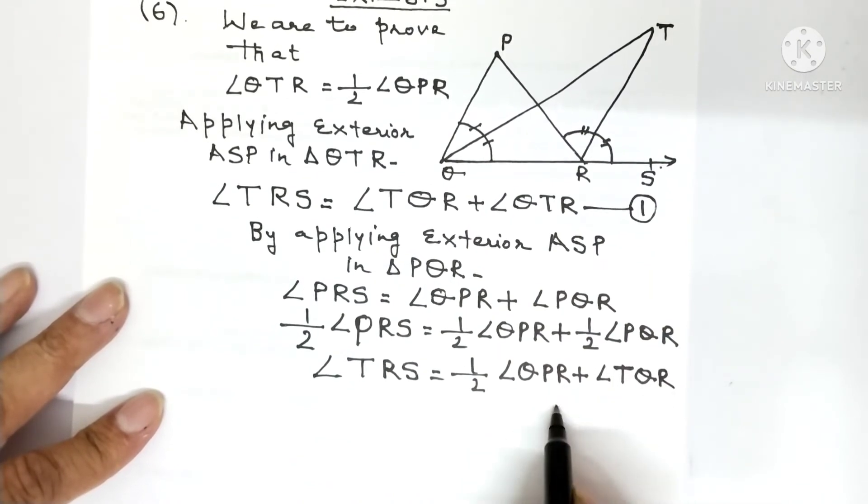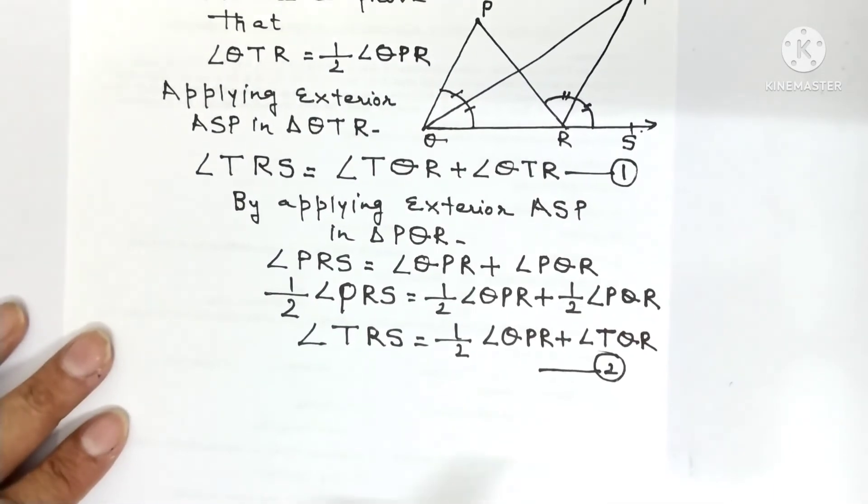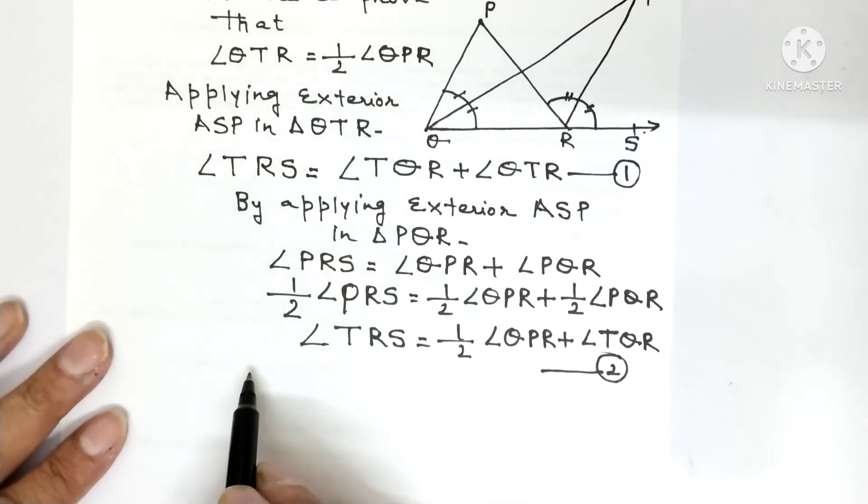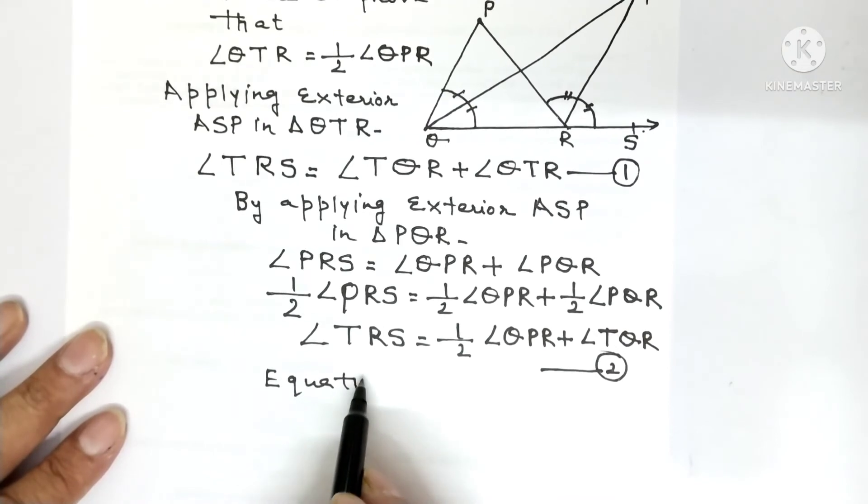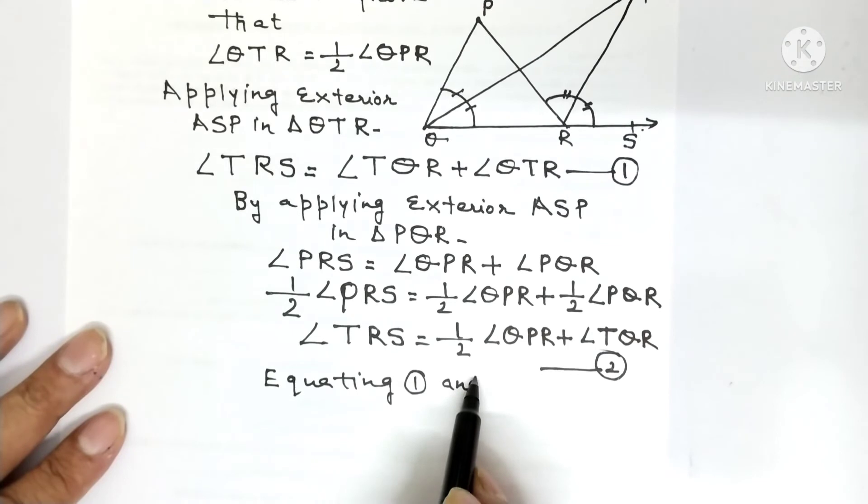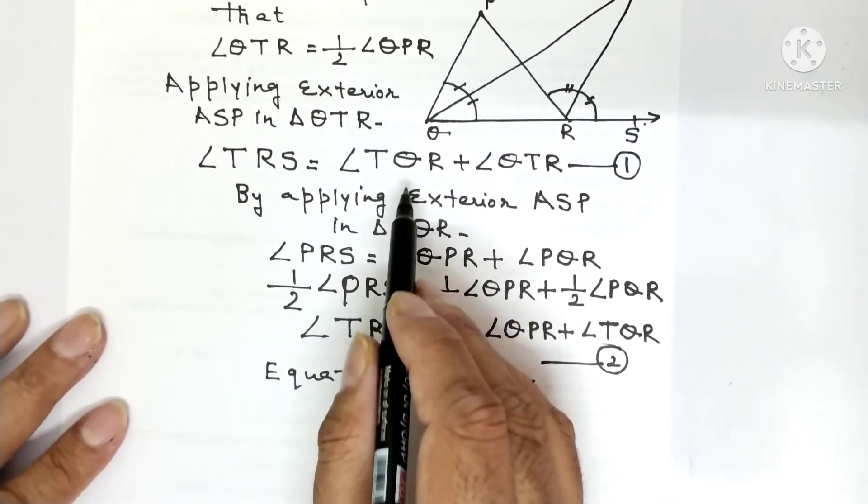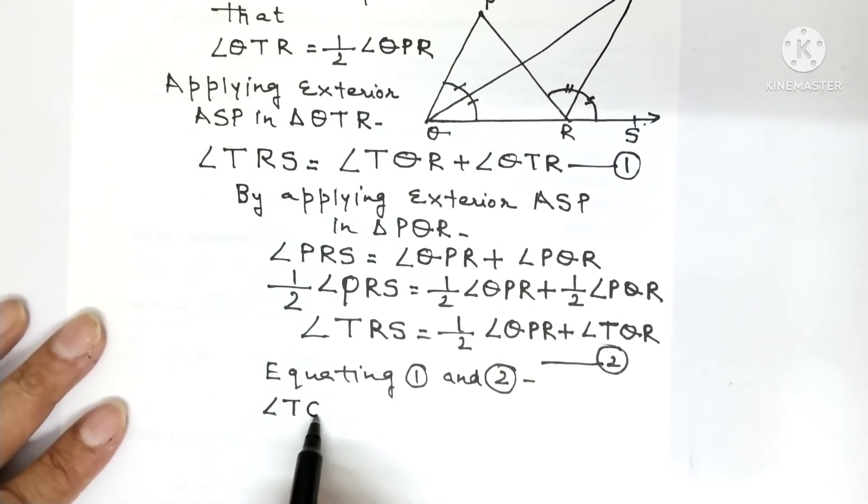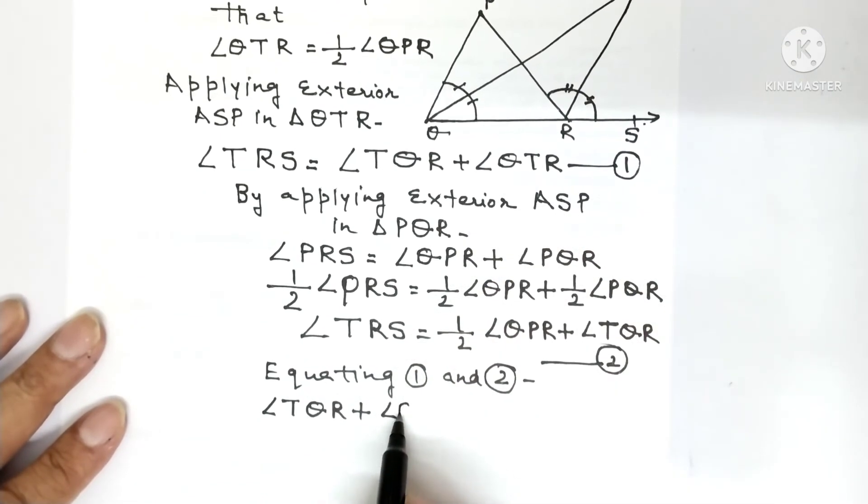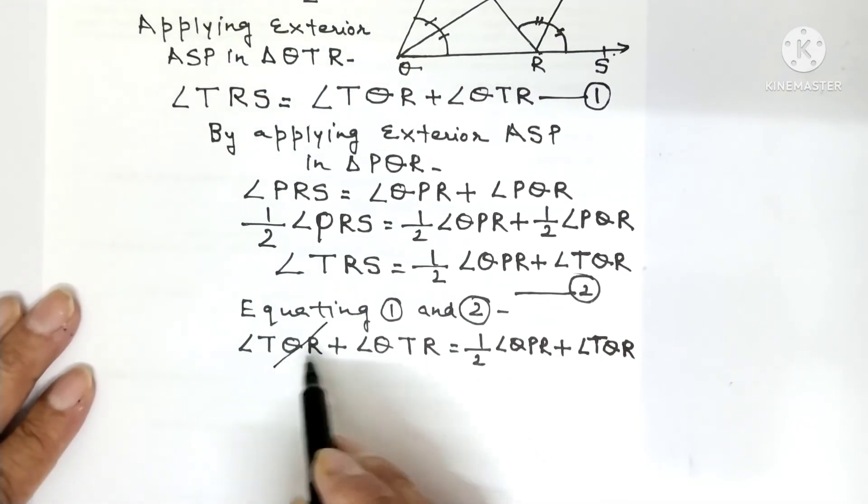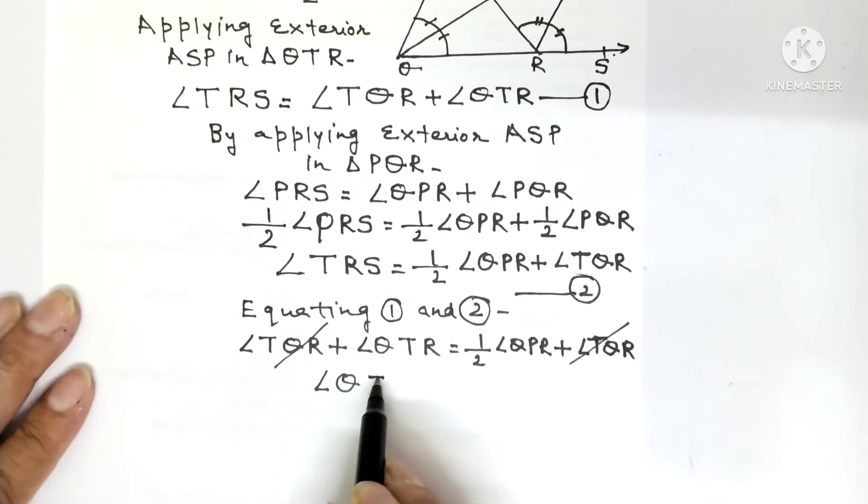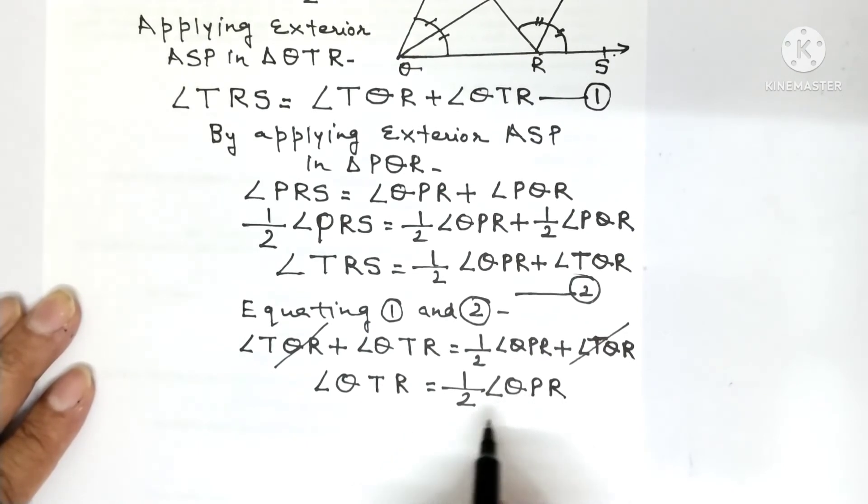Now when you look at equations 1 and 2, here also TRS is there and here also TRS is there. Since the left side is equal, you can equate these two equations. Equating 1 and 2, because left side has the same terms. So angle TQR plus angle QTR equals half of angle QPR plus angle TQR. You can observe that TQR is on both sides, so cancel it. So angle QTR is equal to one-half of angle QPR, and this is what you had to prove.